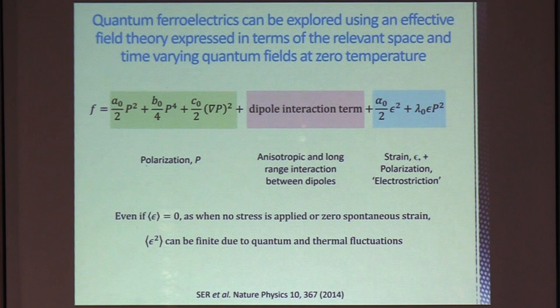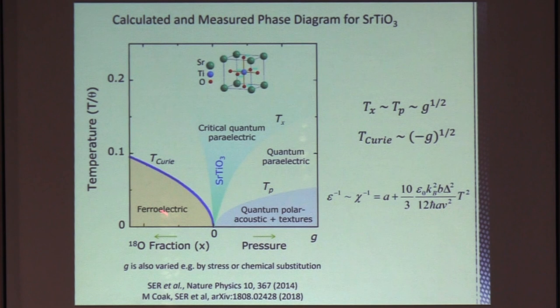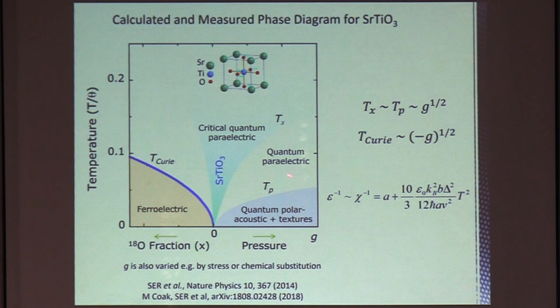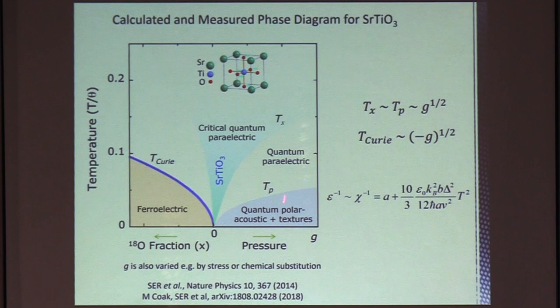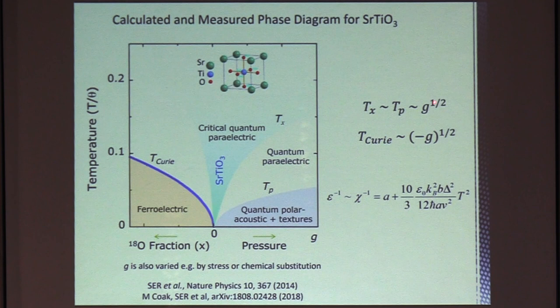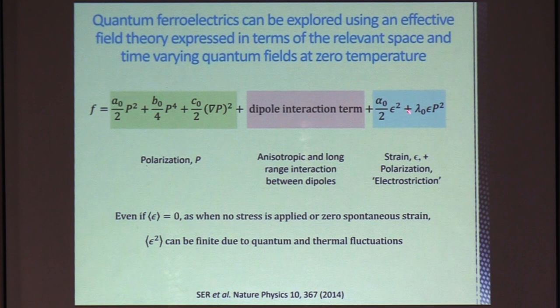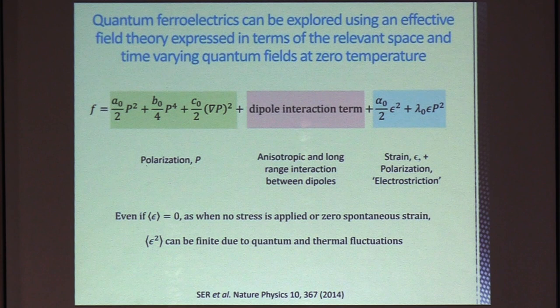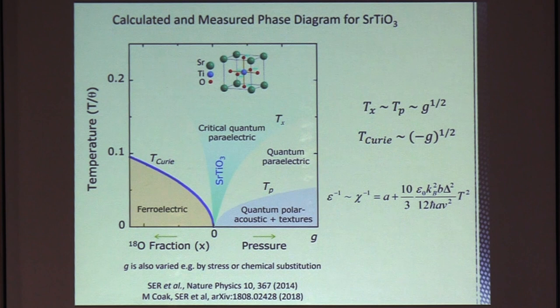So this is what we found in the case of strontium titanate. Here you have ferroelectricity tuned to zero. And then there's a crossover line here, Tx, between a gapped quantum paraelectric state and a quantum critical state. It's in here where we see the inverse susceptibility going as T squared. And then there's another line here, which shows up as a peak in the susceptibility at low temperatures. And this peak follows this square root dependence here of the tuning parameter. And the peak arises due to this coupling to strain here. So when you integrate out the fluctuations in the strain and see what happens in the electric susceptibility, it gives you a peak. So the acoustic phonons sort of take on a polar nature because they're mixed with the optical dipolar fluctuations.